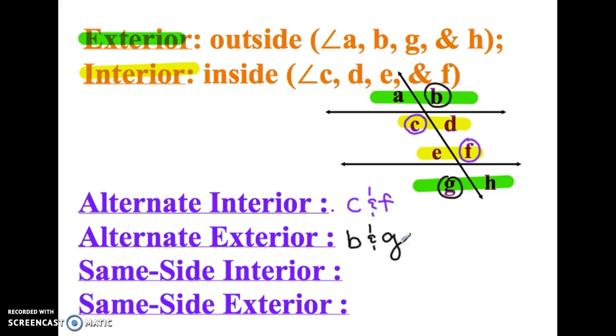So B and G would be a specific example of alternate exterior angles. Both on the outside, one on the top right, the other one on the bottom left, as opposite as you can get.